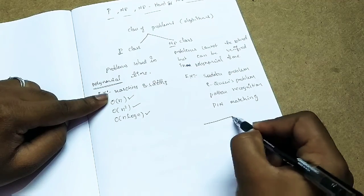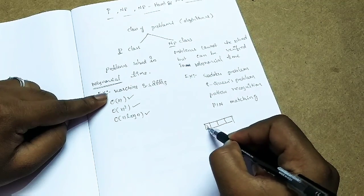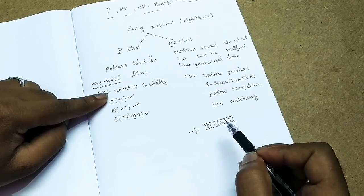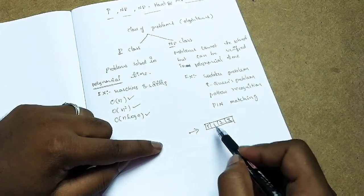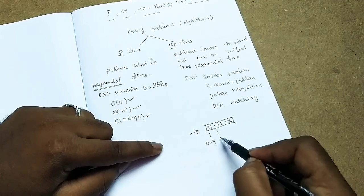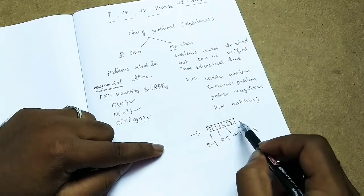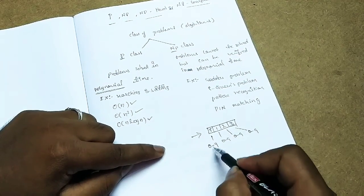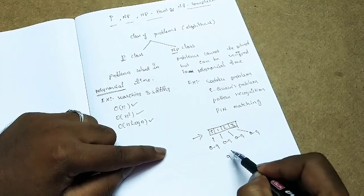There are permutations. There are 4 numbers — let us say 5, 1, 2, 3. I have to find the permutations. This is an NP class problem. When I enumerate all permutations, the number of possibilities is 9 to the power of 4 — that is exponential time.